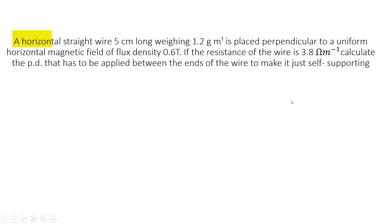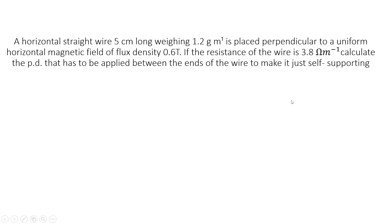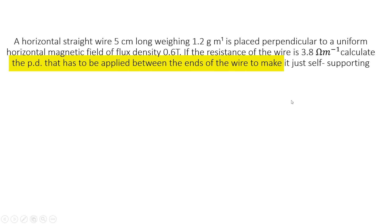A horizontal straight wire 5 cm long, weighing 1.2 gram per meter, is placed perpendicular to a uniform horizontal magnetic field of flux density 0.6 tesla. If the resistance of the wire is 3.8 ohm per meter, calculate the potential difference that has to be applied between the ends of the wire to make it just self-supporting.